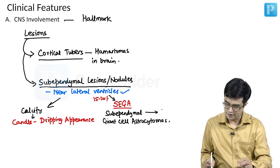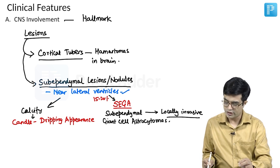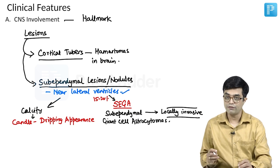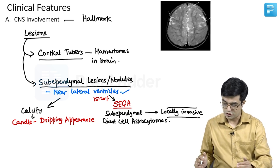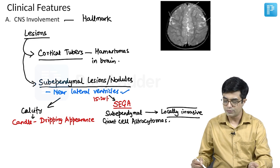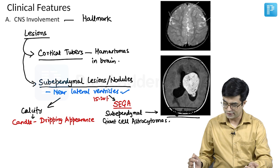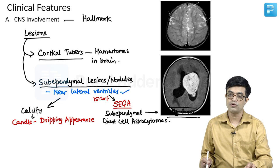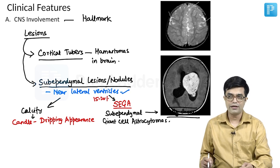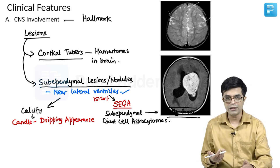SEGAs are locally invasive tumors that tend to produce hydrocephalus. As seen on imaging, they are present in the lateral ventricle region, grow locally, and tend to cause obstructive hydrocephalus. SEGAs do not disseminate — they are not frankly malignant, but are locally invasive tumors. Cortical tubers can also be seen scattered throughout the brain on imaging.